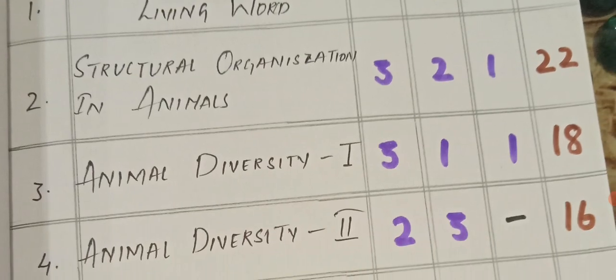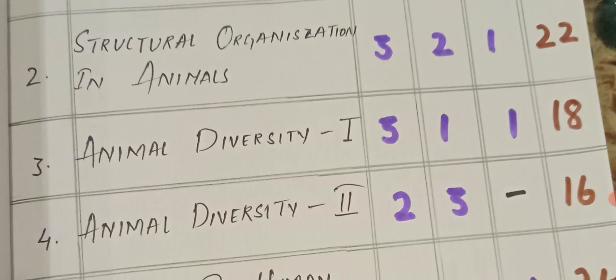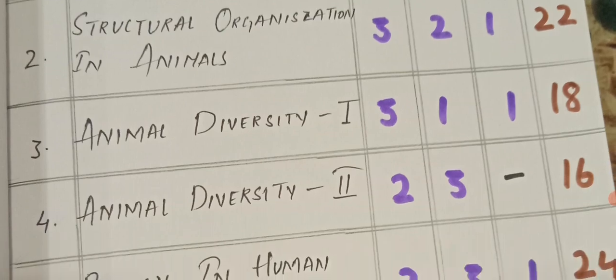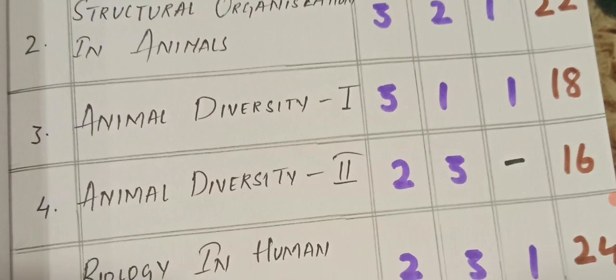Animal Diversity 1: 3 VSAQs, 1 SAQ, and 1 LAQ, total 18 marks. Animal Diversity 2: 2 VSAQs, 3 SAQs, total 16 marks.